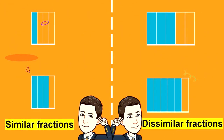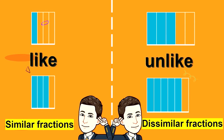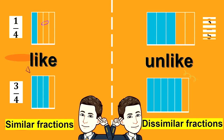We are now moving on to similar fractions and dissimilar fractions. Similar or like fractions are fractions with the same denominators. On the other hand, dissimilar or unlike fractions are fractions with different denominators. Now, let us consider the fractions 1 over 4 and 3 over 4 — notice that they have the same denominator of 4. Let us also consider 3 over 5 and 5 over 6 — notice that they do not have the same denominator.